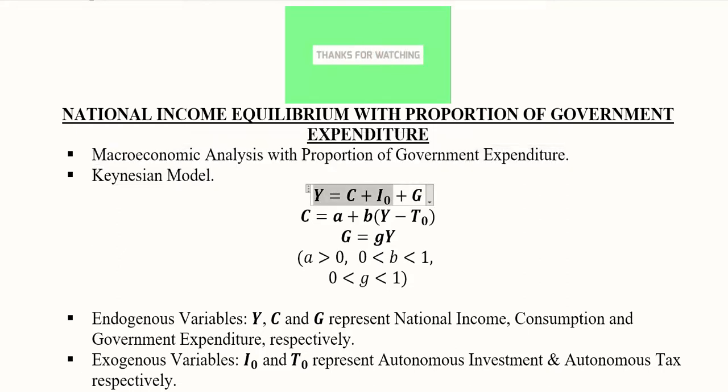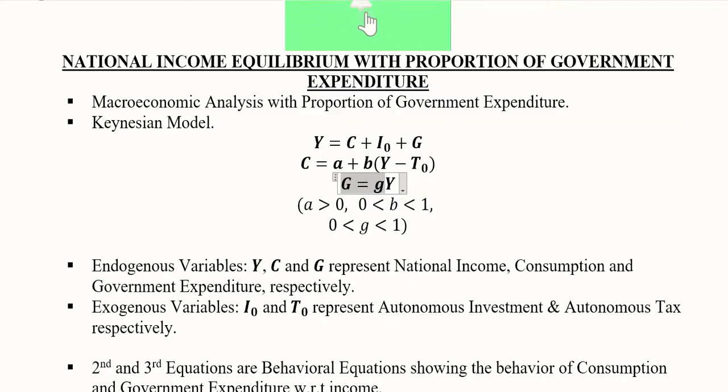So Keynesian model is considered the expenditure approach. Here only I₀ is having this not sign in the subscript because this is the only autonomous part. C has its determination with the help of this equation and G also gets determined with the help of this equation. And we have those parametric stipulations that we had before. A is positive, B is a fraction and G is also a fraction.